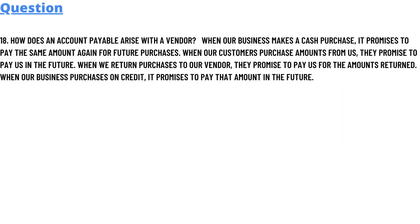Today's question is number 18: How does an account payable arise with vendors? Option A: When our business makes a cash purchase, it promises to pay the same amount again for further purchase. Option B: When our customers purchase an amount from us, they promise to pay us in the future. Option C: When we return a purchase to our vendor, they promise to pay us for the amounts returned. Option D: When our business purchases on credit, it promises to pay that amount in the future.